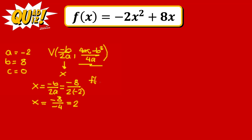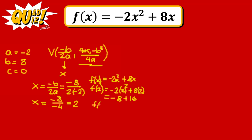Our original function is f(x) = negative 2x squared plus 8x. If we compute f(2), meaning we substitute x = 2, we get: negative 2 times 2 squared, plus 8 times 2. So that's negative 2 times 4, which is negative 8, plus 16. This gives us positive 8. So the vertex is at the point (2, 8) in our Cartesian plane.